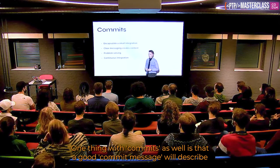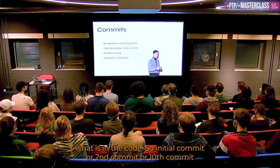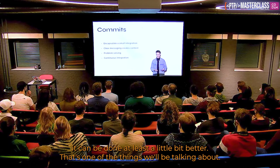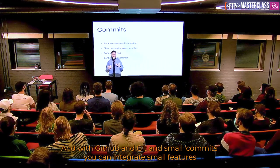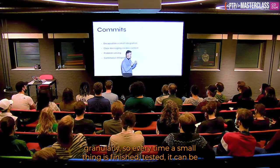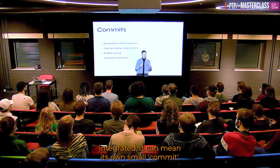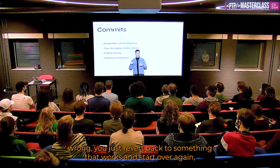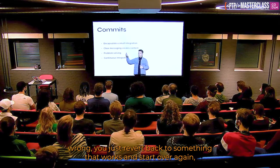One thing with commits is that a good commit message will describe what is in the code. 'Initial commit' or 'second commit' can be done better. With GitHub and Git and small commits, you can integrate small features granularly — every time a small thing is finished and tested, it can be integrated in its own commit. This way, one feature can be built up of small bits, and every time something goes wrong you can revert back to something that works.